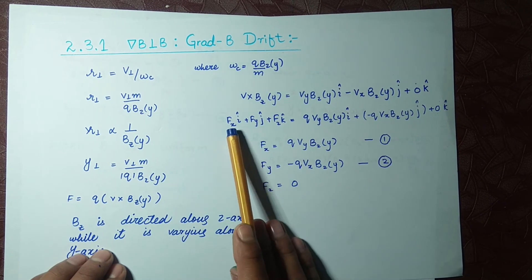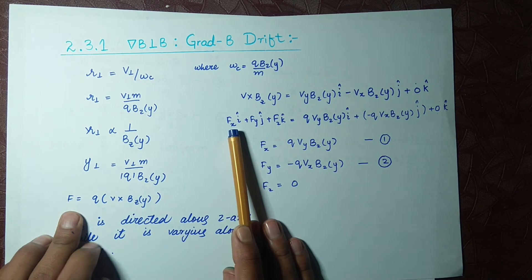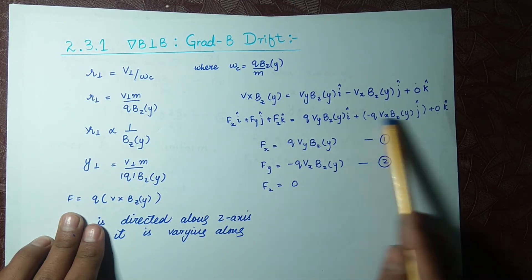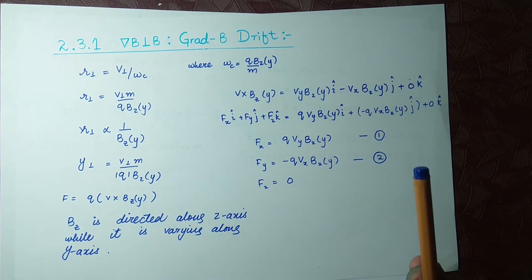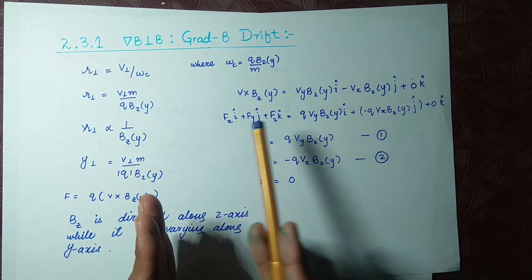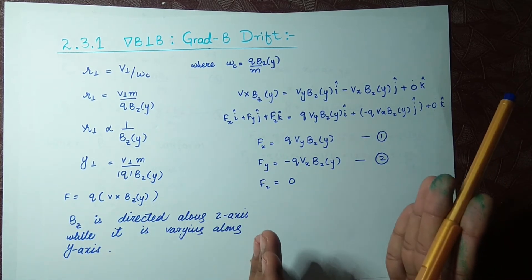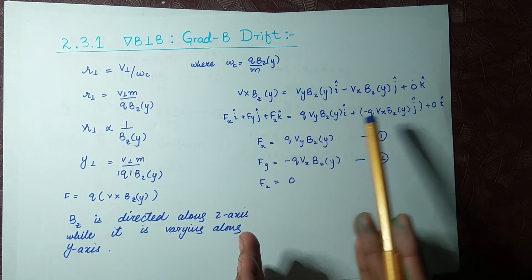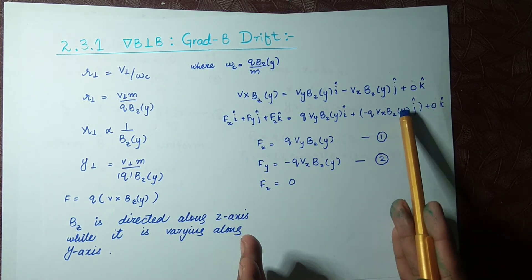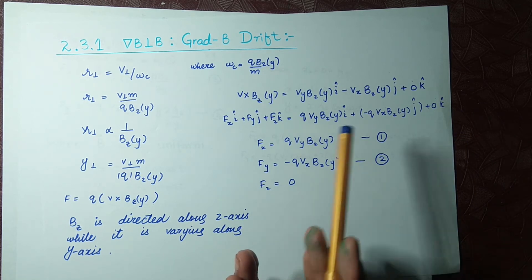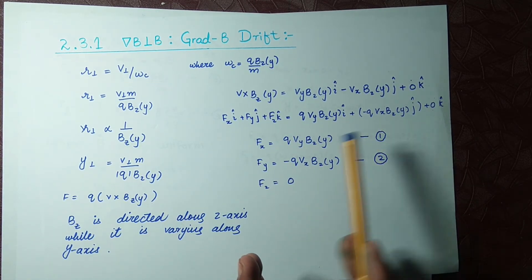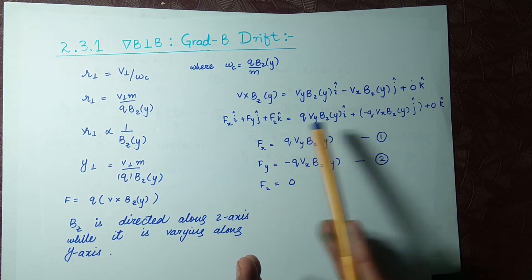Resolving F into its x, y, and z components and comparing respective components — x with x, y with y, z with z, i unit vector with i, j with j, k with k — we find: Fx equals this term, Fy equals this term, and Fz equals zero.